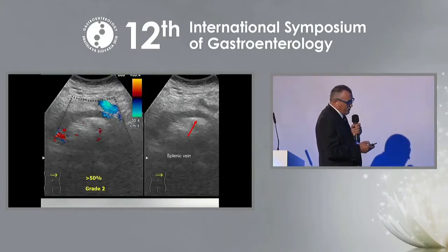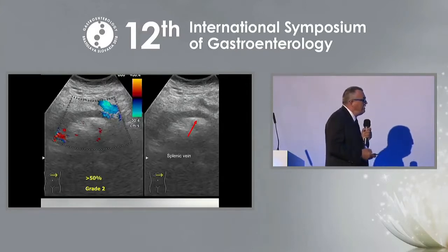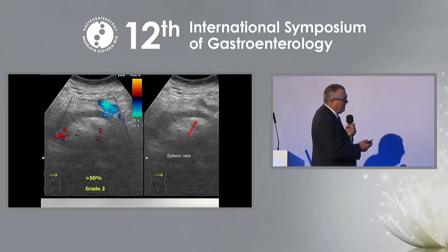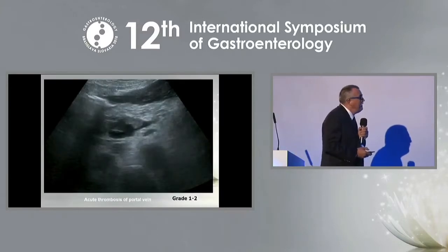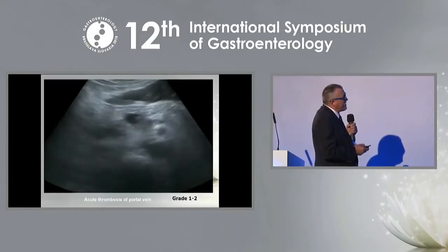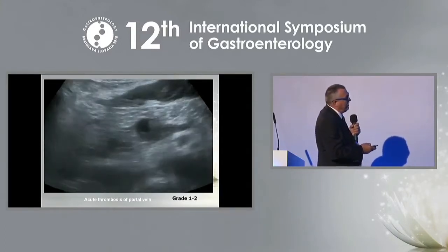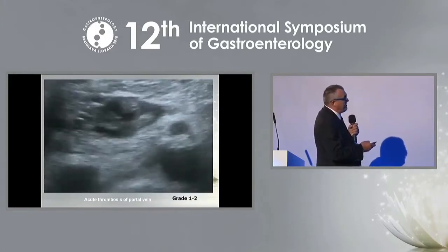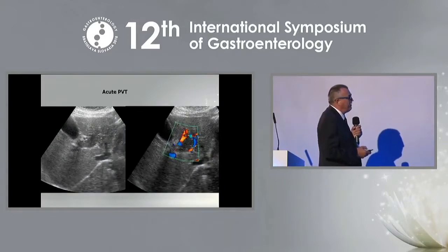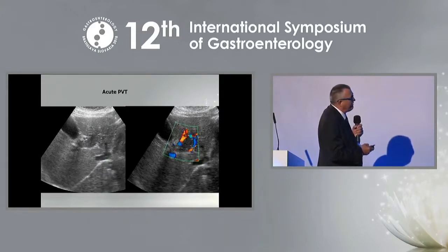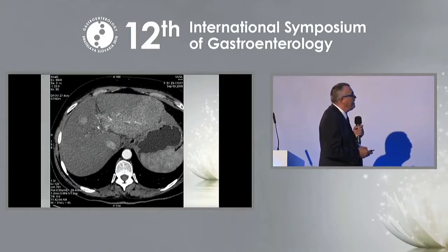Splenic vein thrombosis occurs very often in pancreatitis. Here is a Grade 2 case with more than 50% thrombosis of the splenic and portal vein. Acute thrombosis can be seen clearly on black-and-white imaging, but if uncertain, you can apply Doppler, where only arterial blood flow surrounding the portal vein is visible.